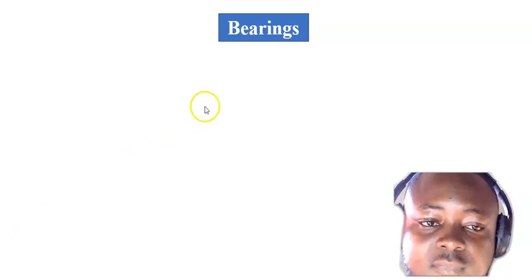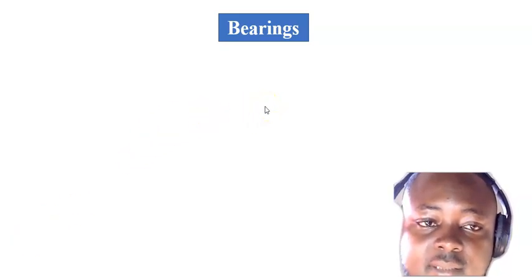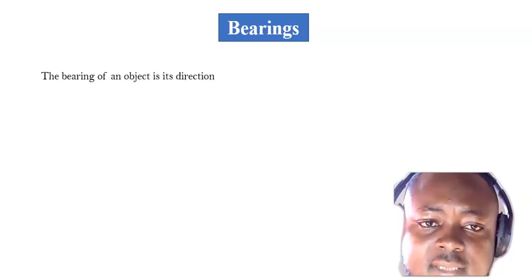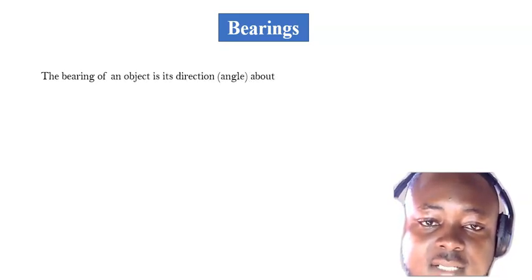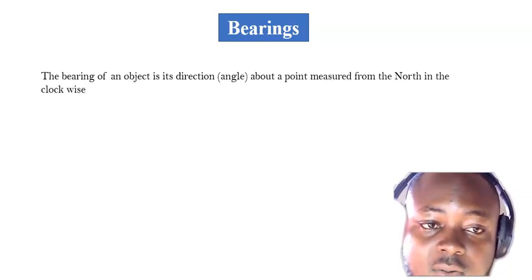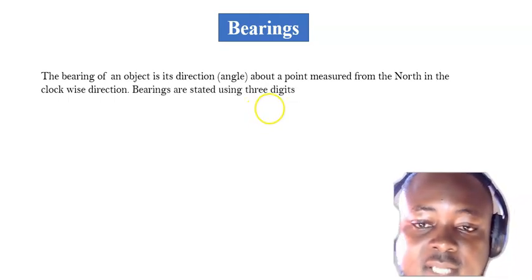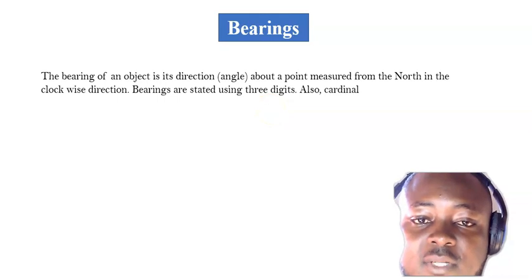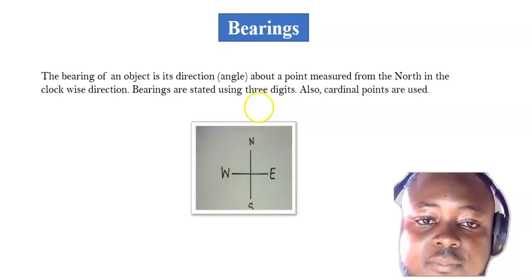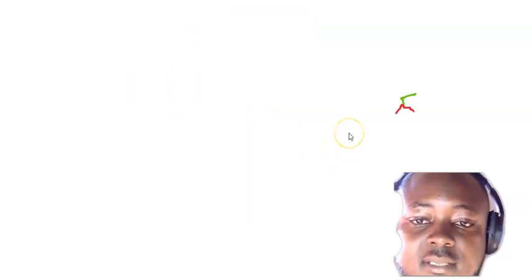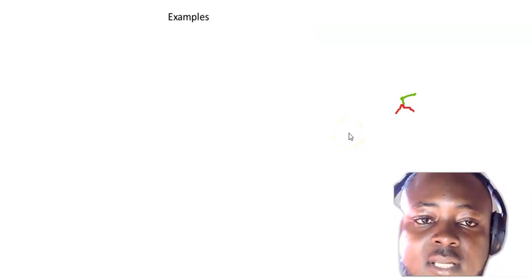What is a bearing? The bearing of an object is its direction — the angle about a point measured from the north in the clockwise direction. Bearings are usually stated with three digits. Cardinal points are also used: north, south, west, and east.